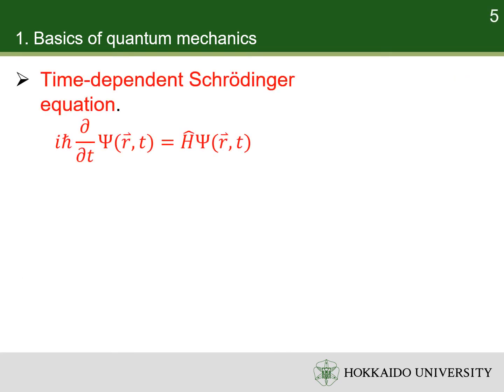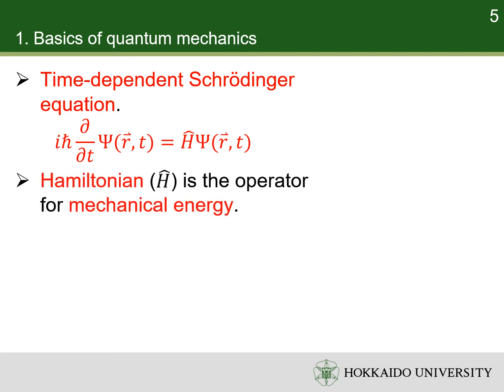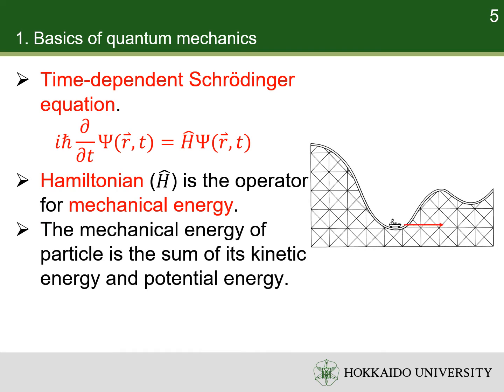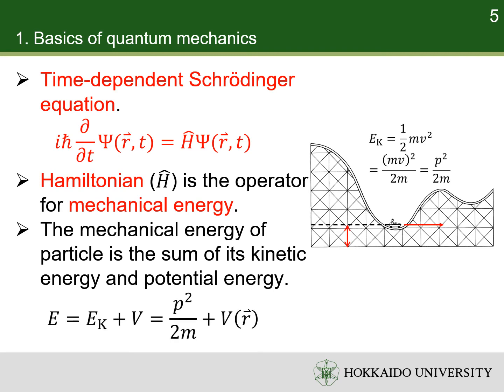The evolution of the time-dependent wave function is governed by the time-dependent Schrödinger equation. It is a partial differential equation. We will not try to solve it here, but I will try to explain it. In the Schrödinger equation, the Hamiltonian is the operator for mechanical energy. The mechanical energy of a particle is the sum of its kinetic energy and potential energy, which is the same in classical and quantum mechanics. The kinetic energy of the particle can be expressed as the square of its momentum divided by two times its mass. The potential energy is a function of its position.